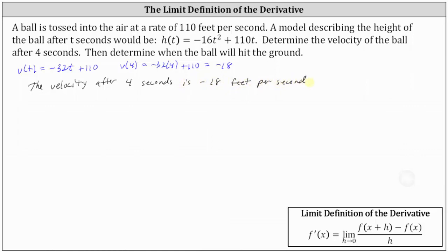Now to answer the second question as to when the ball will hit the ground: the ball hits the ground when the height is zero. Therefore, we set h of t equal to zero and solve for t. This gives us the equation zero equals negative 16t squared plus 110t. Solving by factoring, the greatest common factor on the right is 2t, which gives us 2t times the quantity negative 8t plus 55.